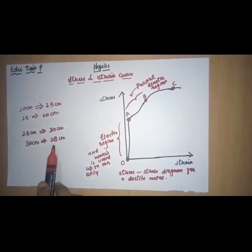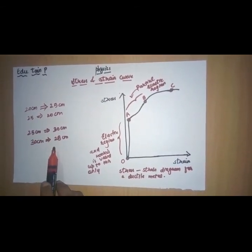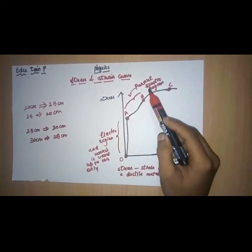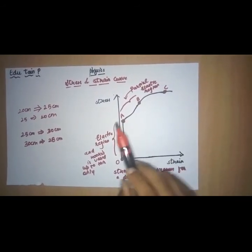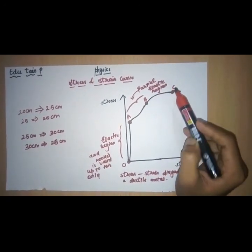Here, it doesn't regain its original length, that is 25 cm. So, it is showing the nature of partial elastic region. Okay? The region from A to B is partial elastic region. Understand?